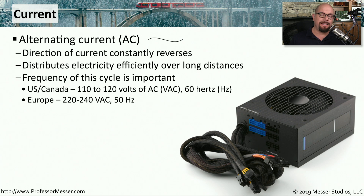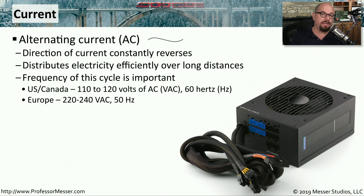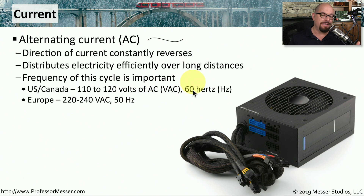Let's look at the two types of currents. Alternating current, abbreviated as AC, is often referenced as a line with curves. As the name implies, alternating current is constantly reversing direction as it flows through the electrical lines, which allows us to efficiently distribute AC power over very long distances. In the United States and Canada, it's common to see AC power running at 110 to 120 volts with a frequency of 60 hertz, or 60 cycles per second. In Europe, it's common to see 220 to 240 volts of AC power with a frequency of 50 hertz.